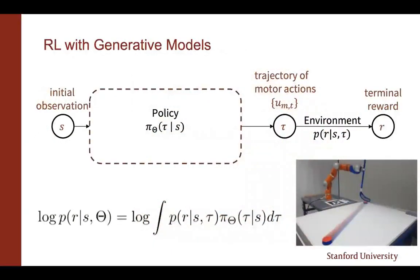Now let's talk about reinforcement learning. Our goal is to train a policy that, conditioned on observations or states, can generate a sequence of trajectories tau that result in high terminal rewards. For the robotic arm example, with a seven-dimensional action space, you might need 200 timesteps of seven motor actions — about 1400 different actions to learn how to shoot the puck. One way to handle this is to learn the entire trajectory at once. The environment is modeled as a probabilistic model assigning a distribution over rewards conditioned on the initial observation and the trajectory chosen by the robot.